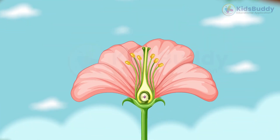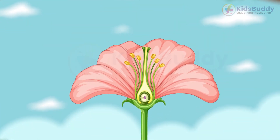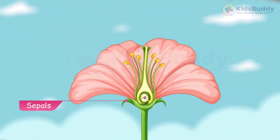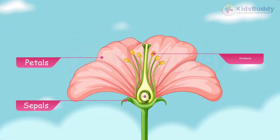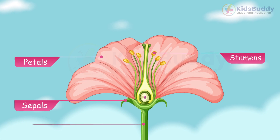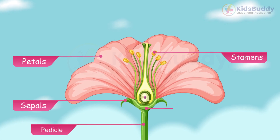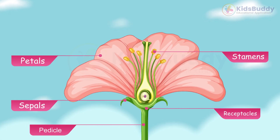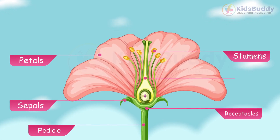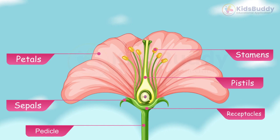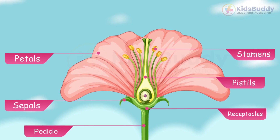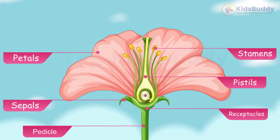The main parts of a flower are the sepals, petals, stamens, pedicel, receptacles, and pistils. Let's take a closer look at each of these parts.